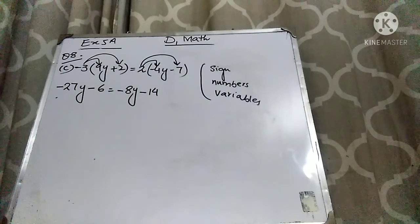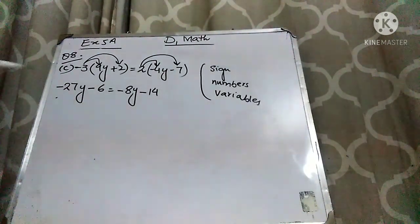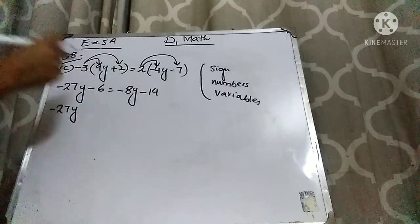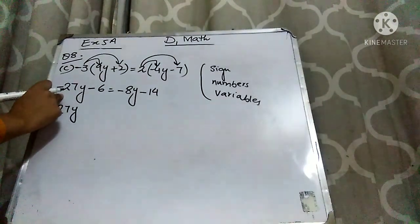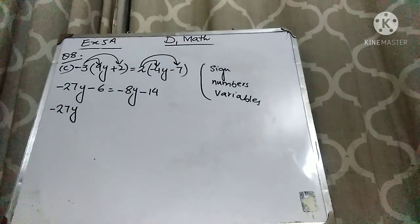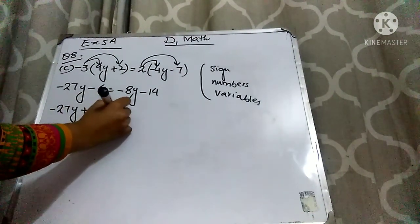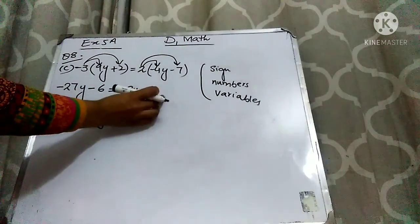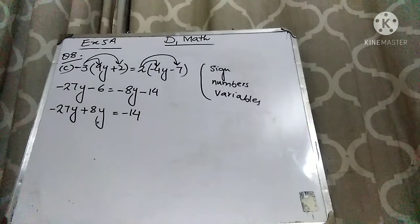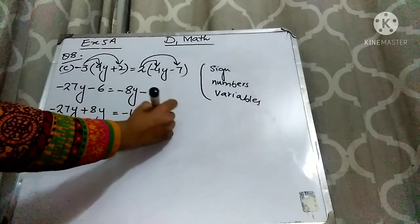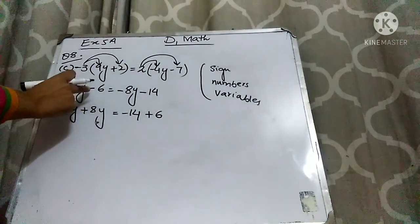In this question, we have to find the value of variable y. I will keep y terms on one side and constants on the other. The variable already here is minus 27y — write it as is. The 8y is subtracting on the right hand side; when it comes to the left hand side, it will add. I have to use the rule: if something is subtracting on one side, when it goes to the other side it will add. The constant already here is minus 14 — write it as is. This 6 is subtracting here; when it goes to the right hand side it will add, so write plus 6.